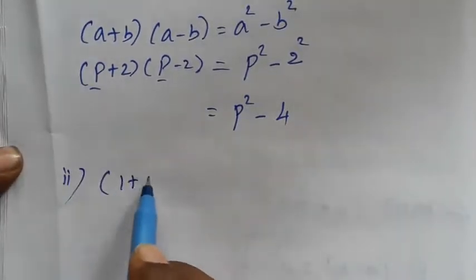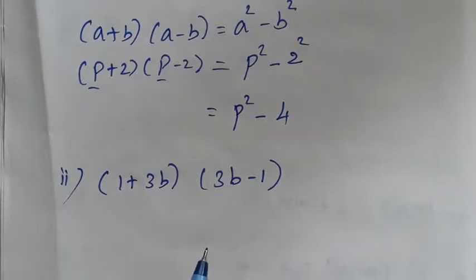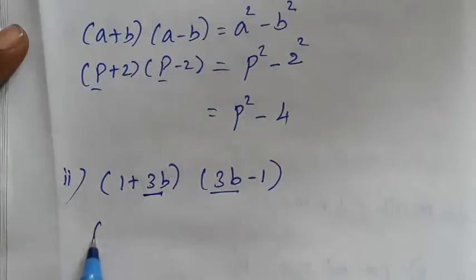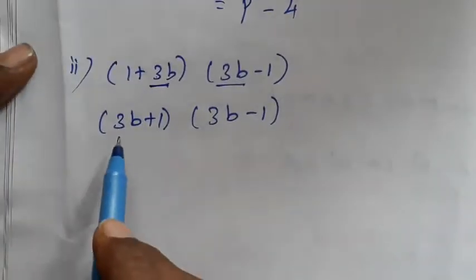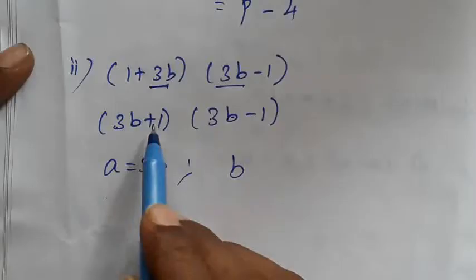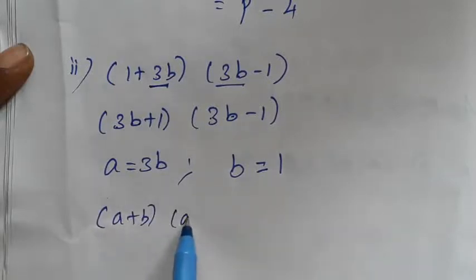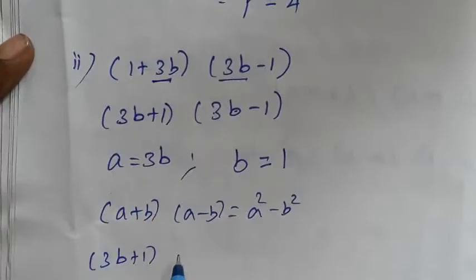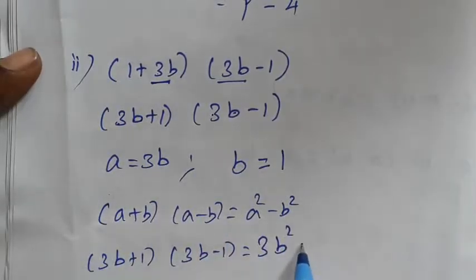What do we use? 1 plus 3P, 3P minus 1. What is the first sum? A is 3P and B is 1. Using A plus B, A minus B equals A squared minus B squared, we write 3P plus 1 and 3P minus 1.